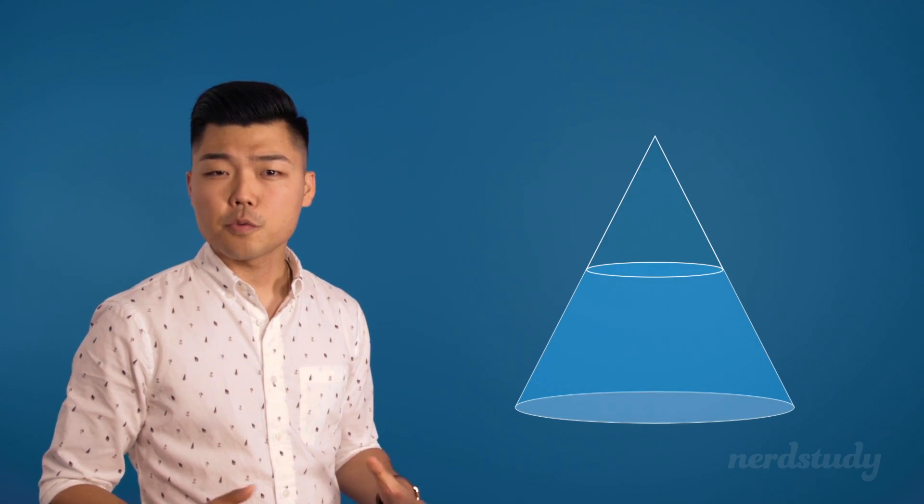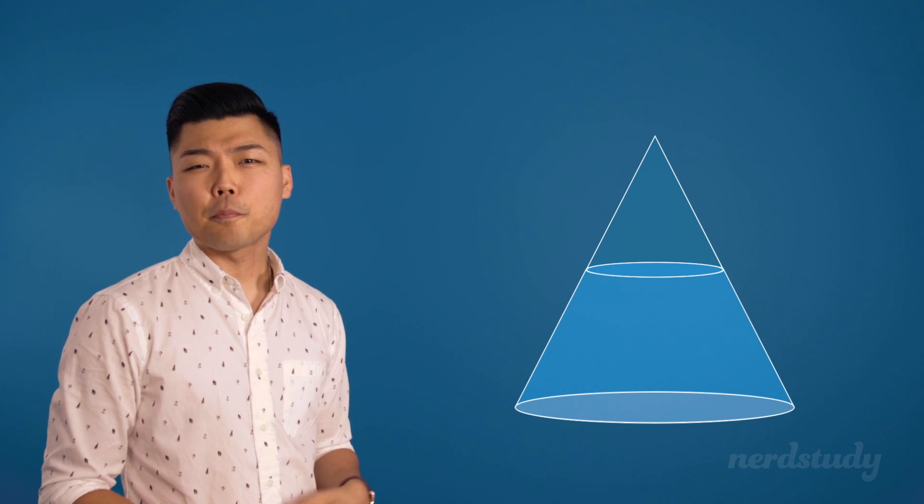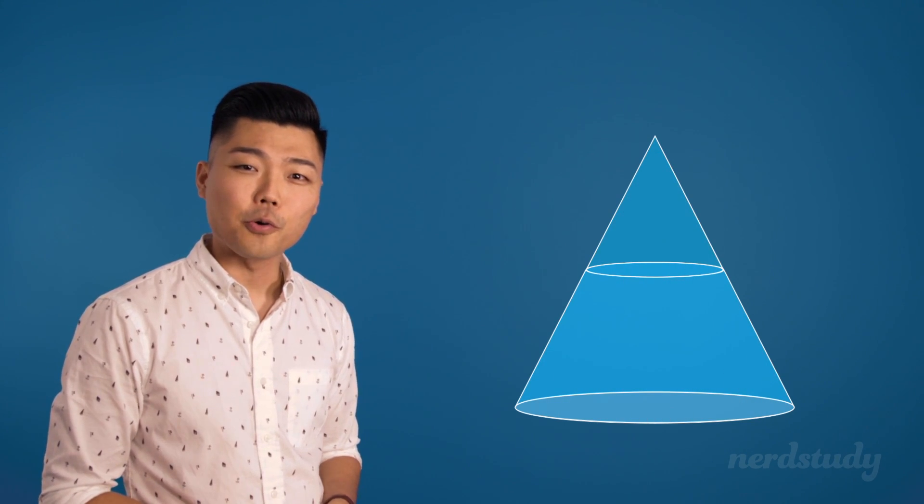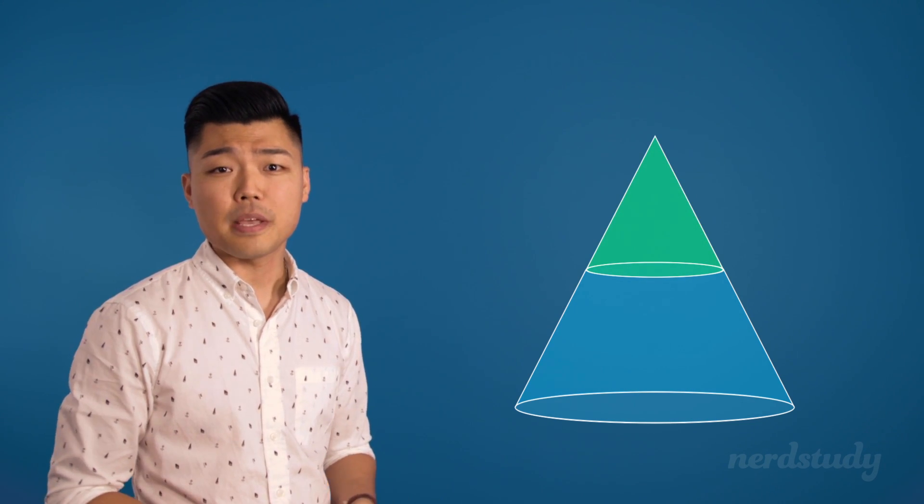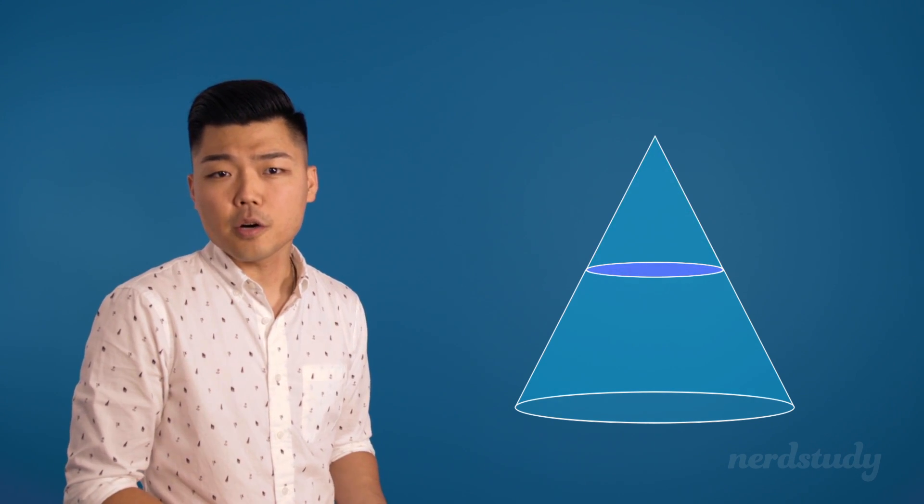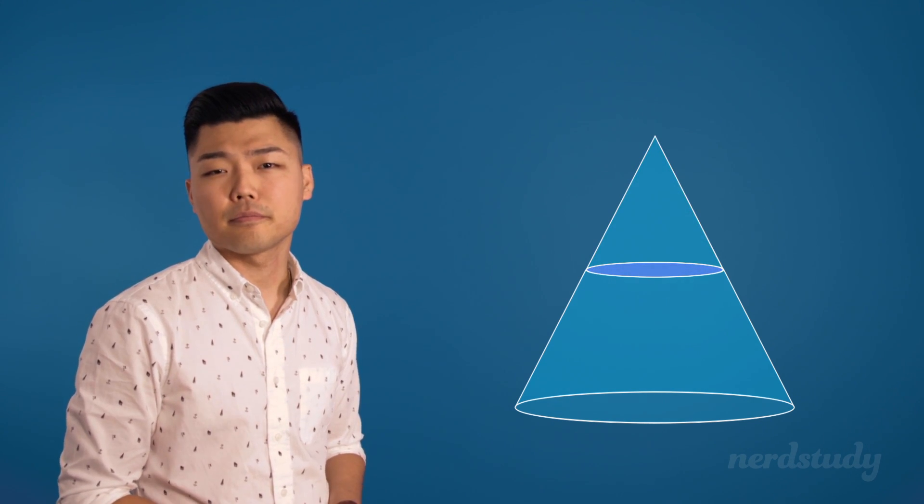Okay, so we want to get the surface area of this right here. But the problem is that if we just get the surface area of an entire cone, then we will have added this amount, which shouldn't be added. And we would not have added this part right here, which should be added. So how would we do this?